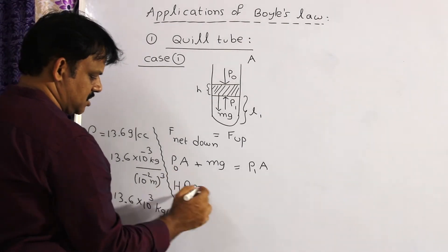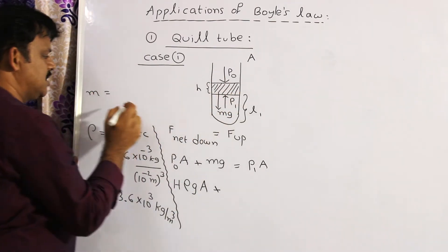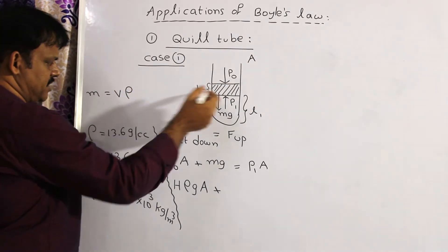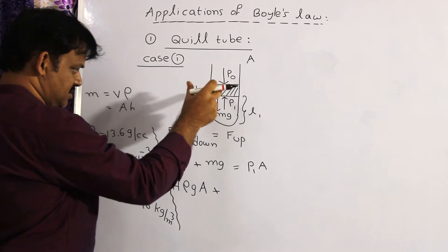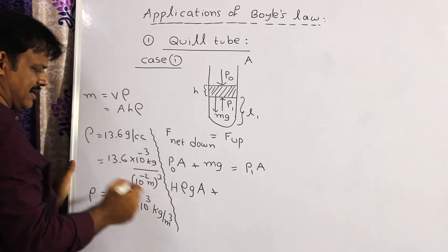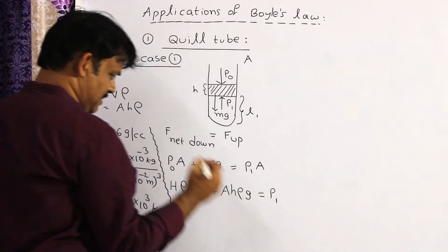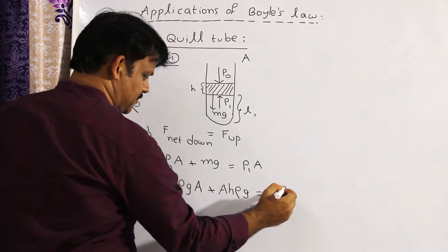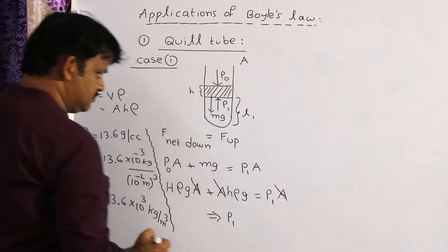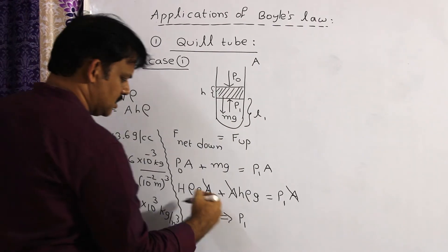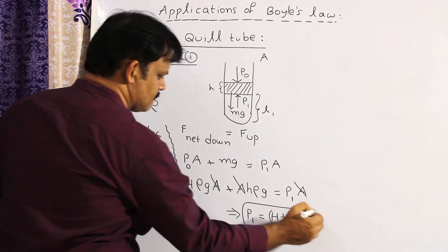So the expression P0 = H·ρ·g, multiplied by area A. Mass M of the mercury pellet equals volume times density: volume = A·h (cylindrical form), so M = A·h·ρ. Substituting and cancelling A, the pressure P1 acting on the mercury pellet by the air column is: P1 = (H + h)·ρ·g. This is the result for Case 1, when the open end is upwards.